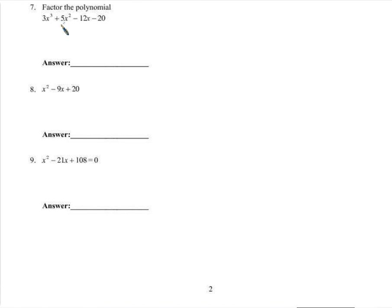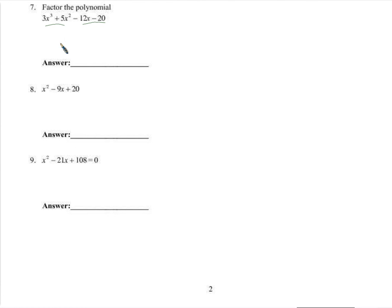Back to the polynomial. First we're going to look for any common factors. A factor of 3? This term doesn't have a factor of 3. An x? This term doesn't have an x factor. So priority one in factoring — finding a common factor — there aren't any common factors. But there are four terms. Remember I said four terms is a prime candidate for factoring by grouping, and at this stage it's the only way we're going to be able to factor more than three terms. If there's four terms and we're going to factor, it's going to be by factoring by grouping.